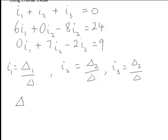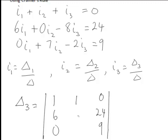Finally delta3. For delta3 the constants go in column 3 so 0, 24, 9 goes into the third column. First column is coefficients of i1, which are 1, 6, 0. Second column is coefficients of i2, which are 1, 0, 7 and that determinant comes out to be negative 222.